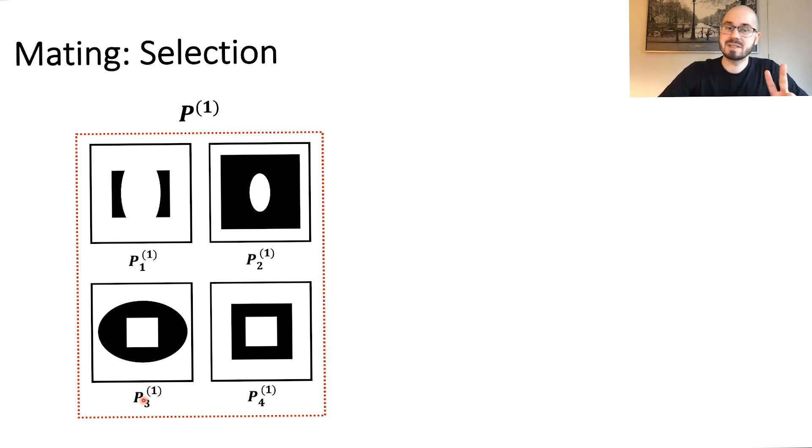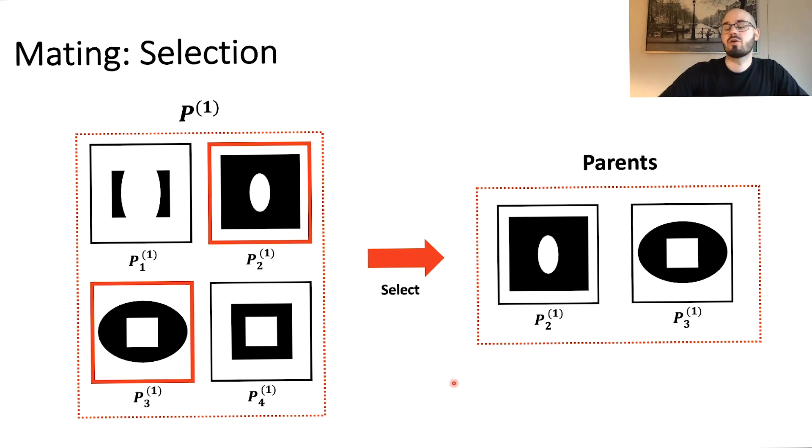Now, the second step, the mating, consisting of three sub-steps: the selection, the crossover, and the mutation. So let's start with the selection. At this point we have the output of our initial initialization step, which is p of 1, our initial population. We start with the selection, which is nothing else than selecting individuals of this current population. Let's just say we are selecting two individuals here, p2 and p3, which is then brought over to the next step to the crossover.